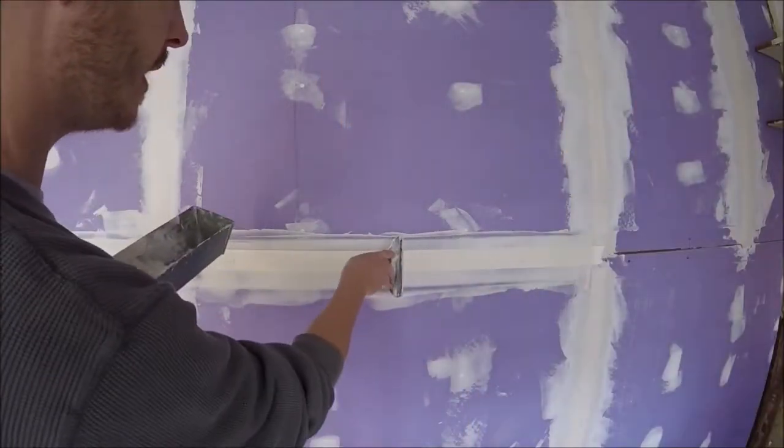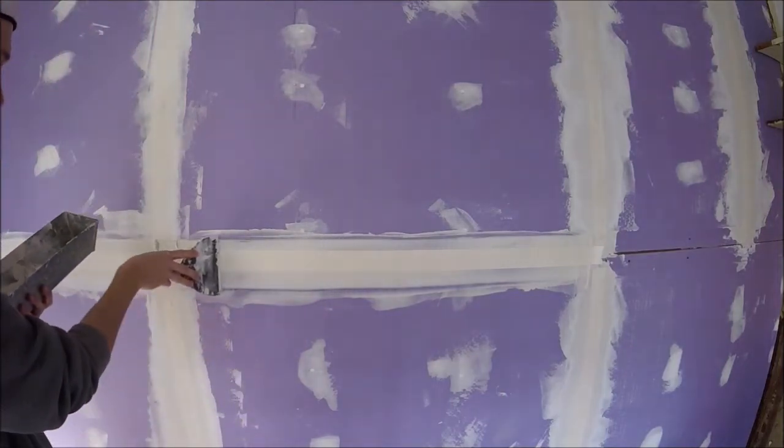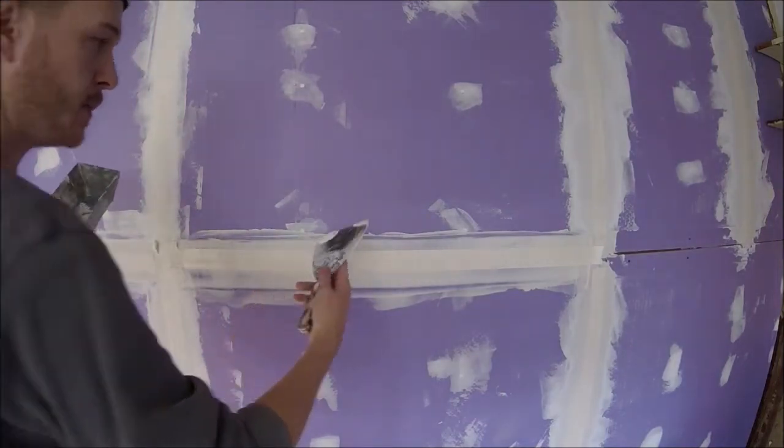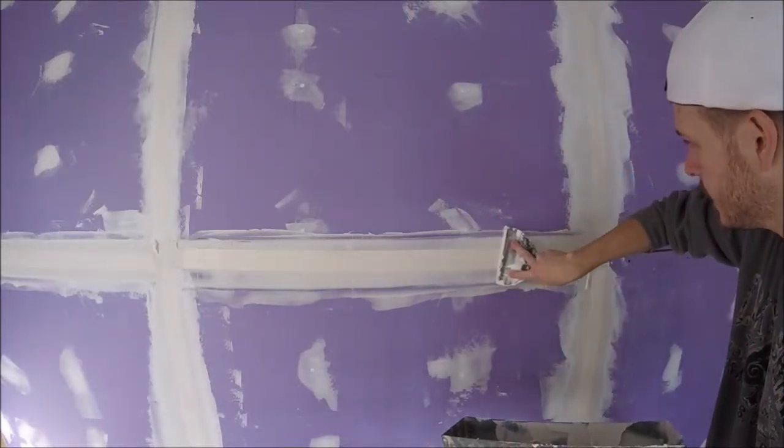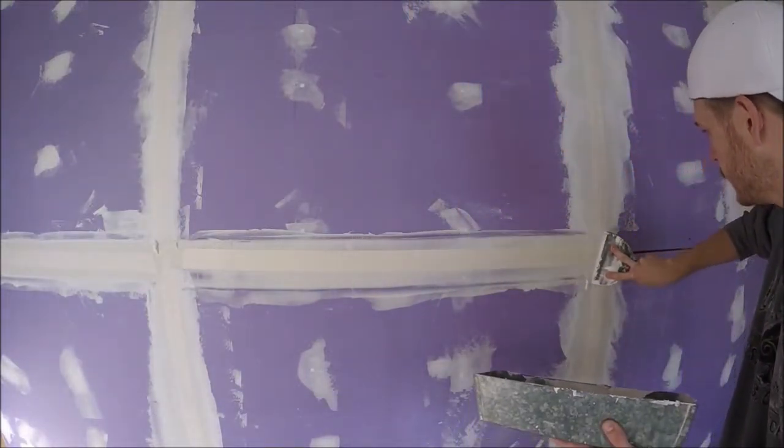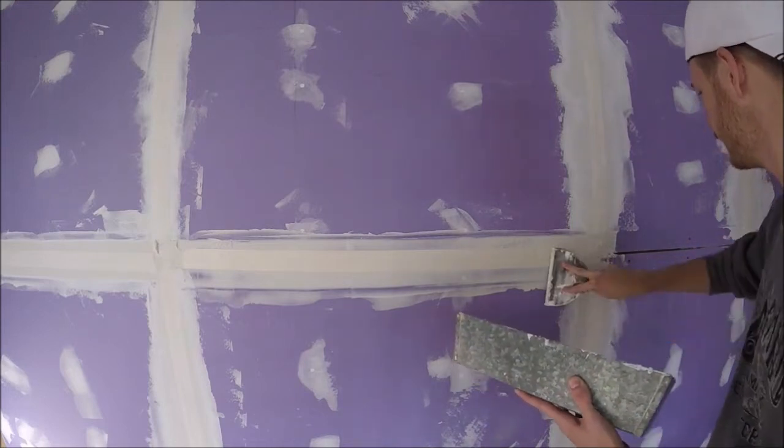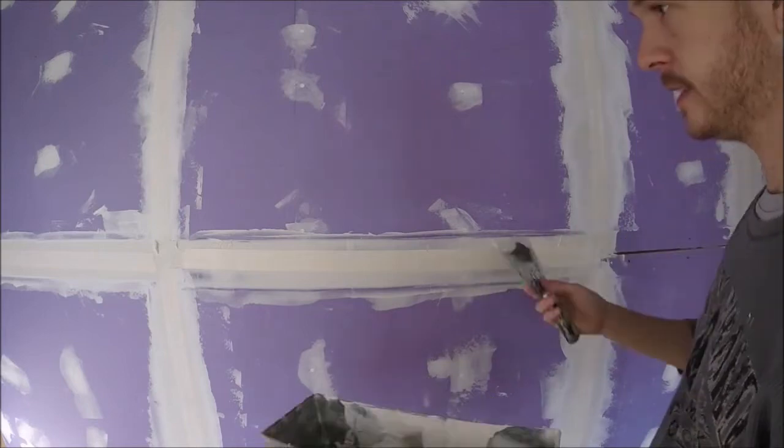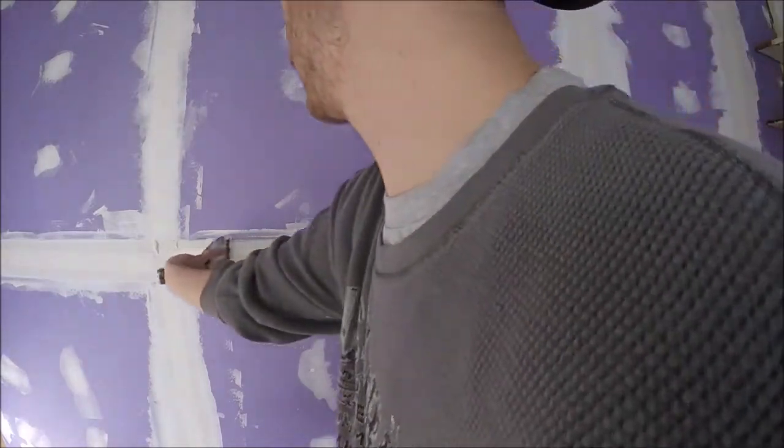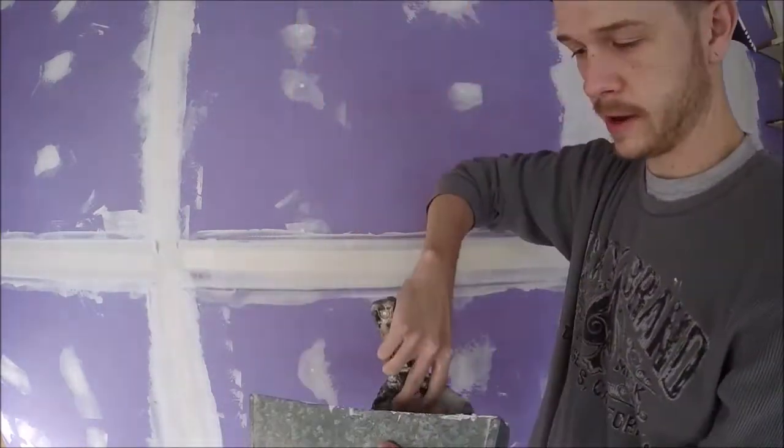We're going to take our knife and start in the middle, just pull it out. Now this paper tape has tiny little holes in it, so that's how it works. Once you've dragged it across and bedded it, you can either leave it or put a little more mud on it.